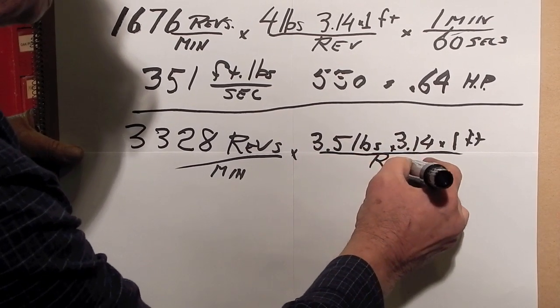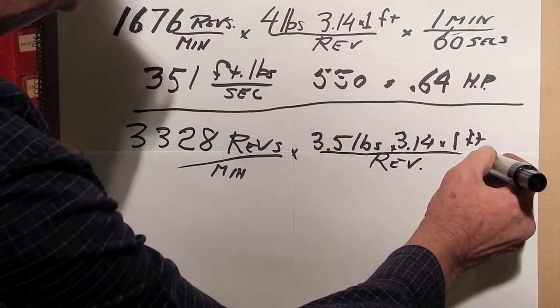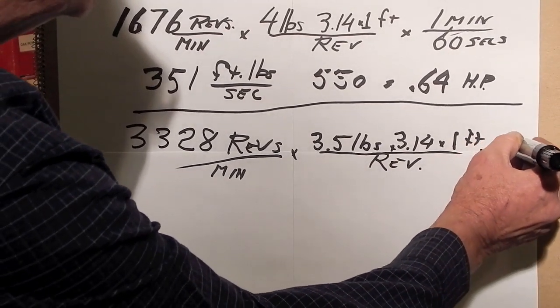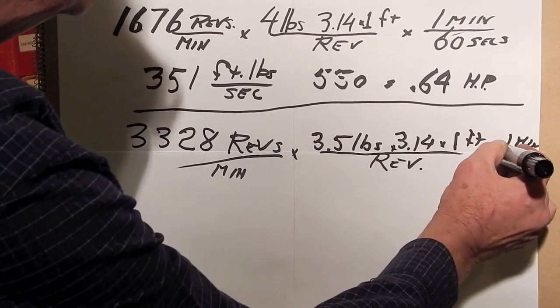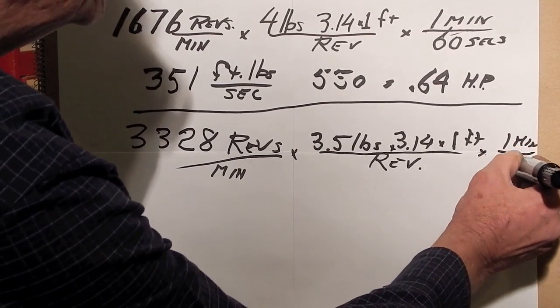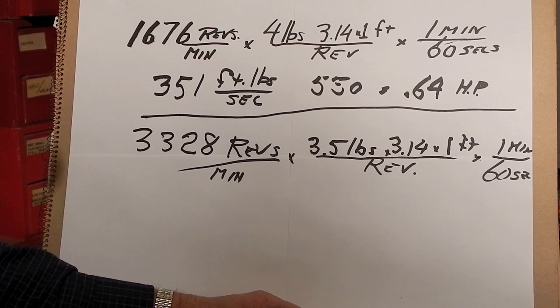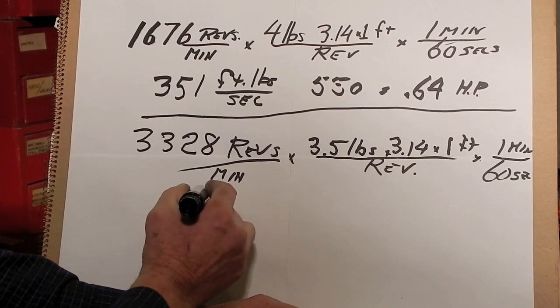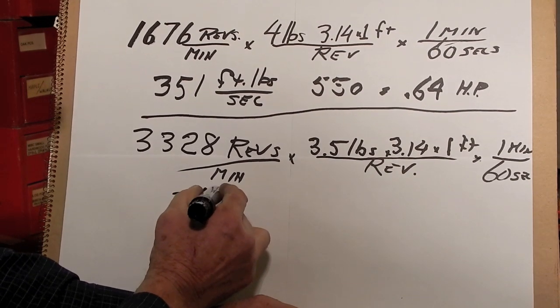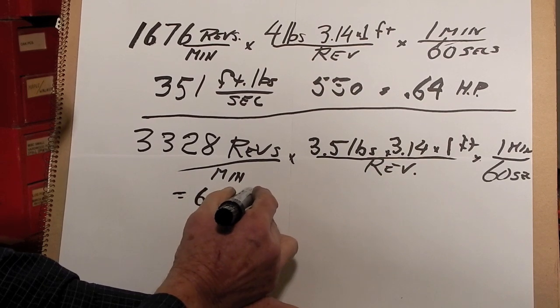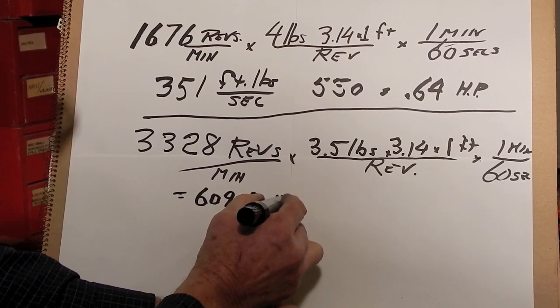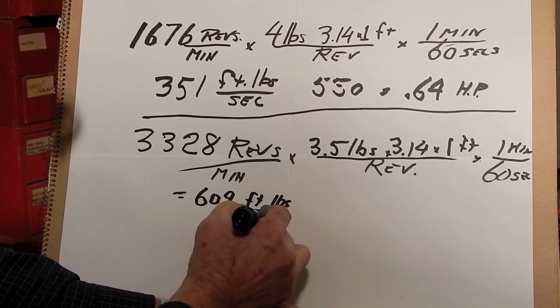That's 3.5 times 3.14 foot-pounds for each theoretical revolution, times one minute divided by 60 seconds. Let's do the arithmetic—it equals 609 foot-pounds per second.